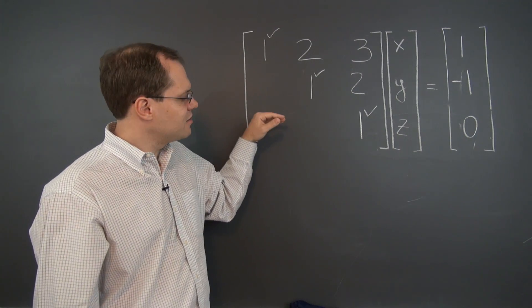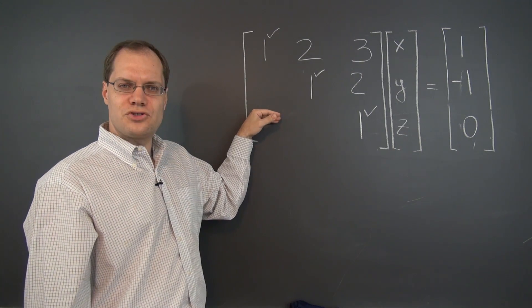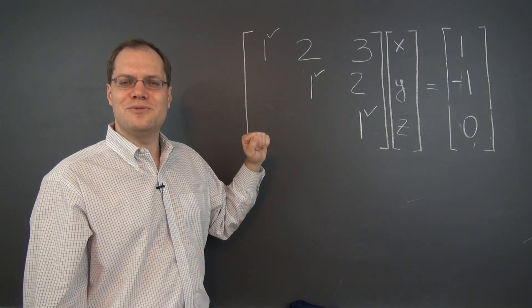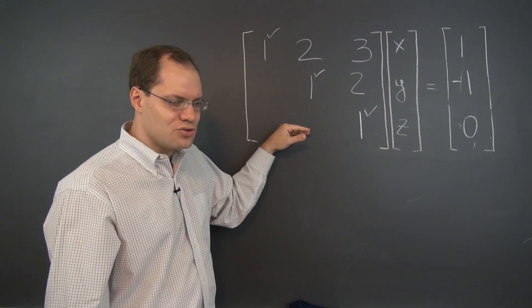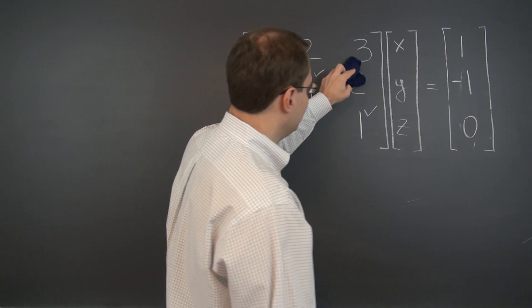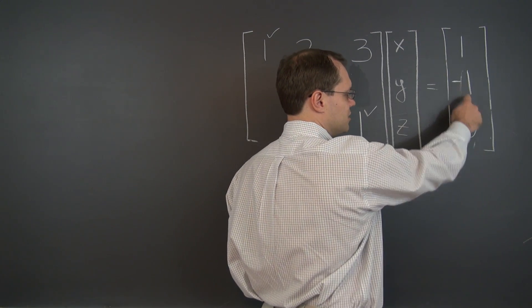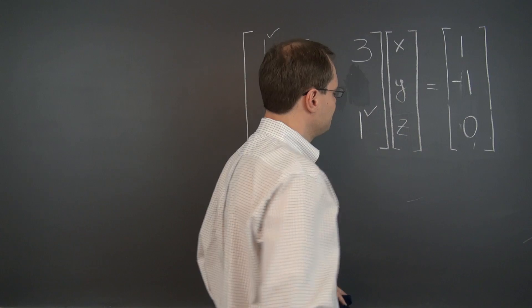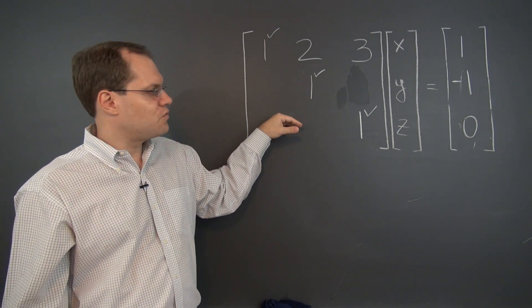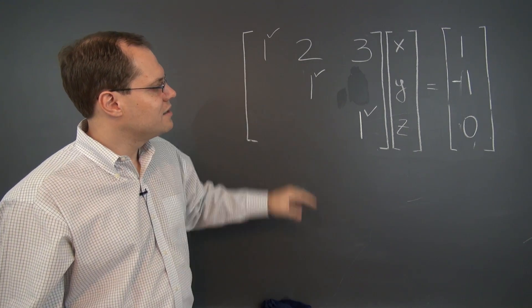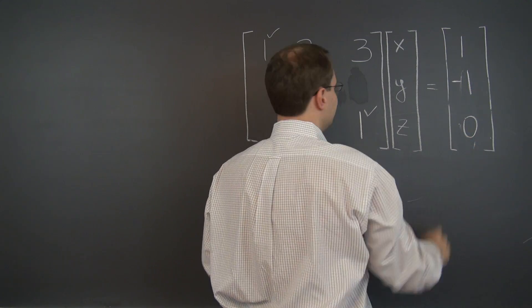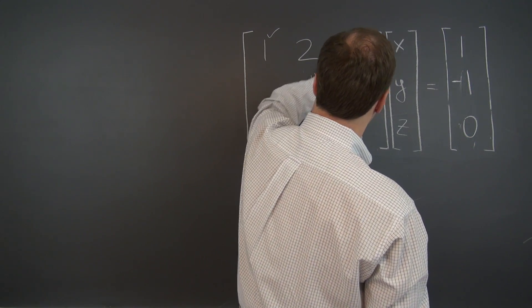Which is accomplished by subtracting two of row three from row two. That will eliminate this two and leave this minus one unchanged because here we have a zero. The next step would be to subtract three of row three from row one. That will eliminate this three but leave this one unchanged because of this zero.